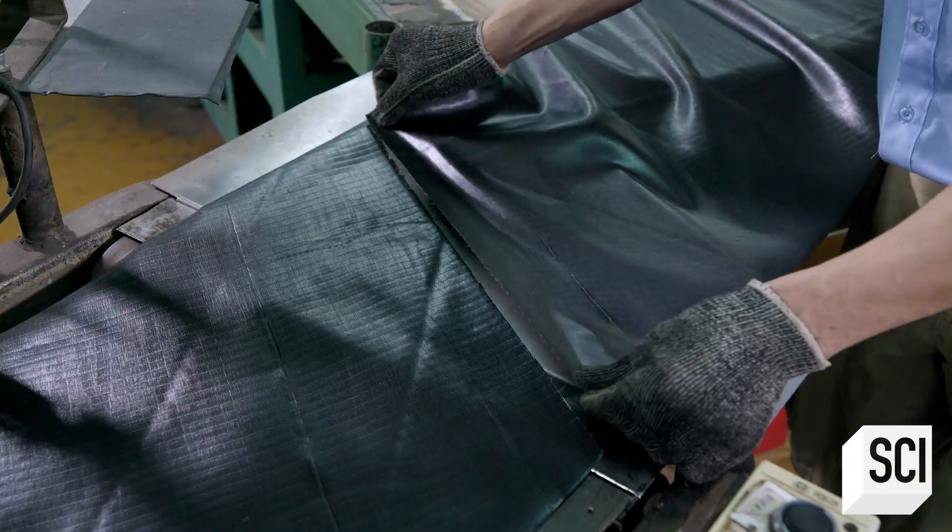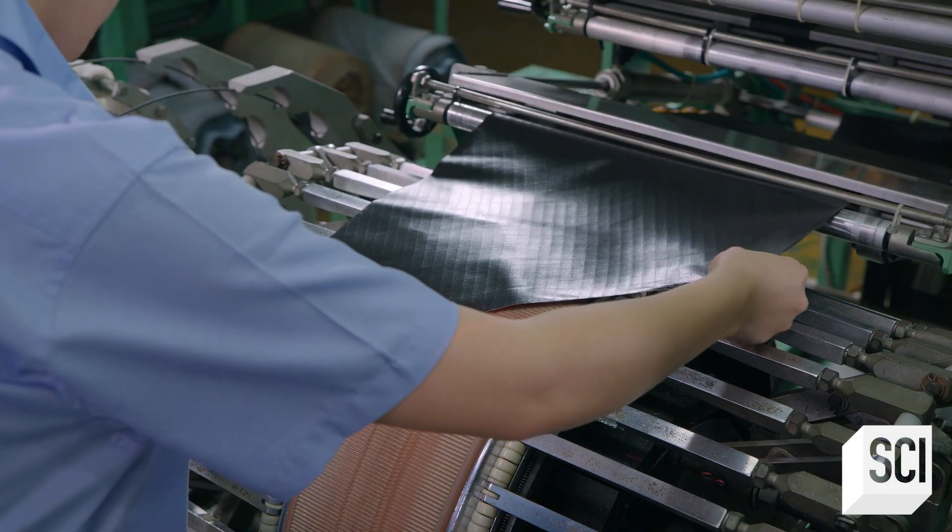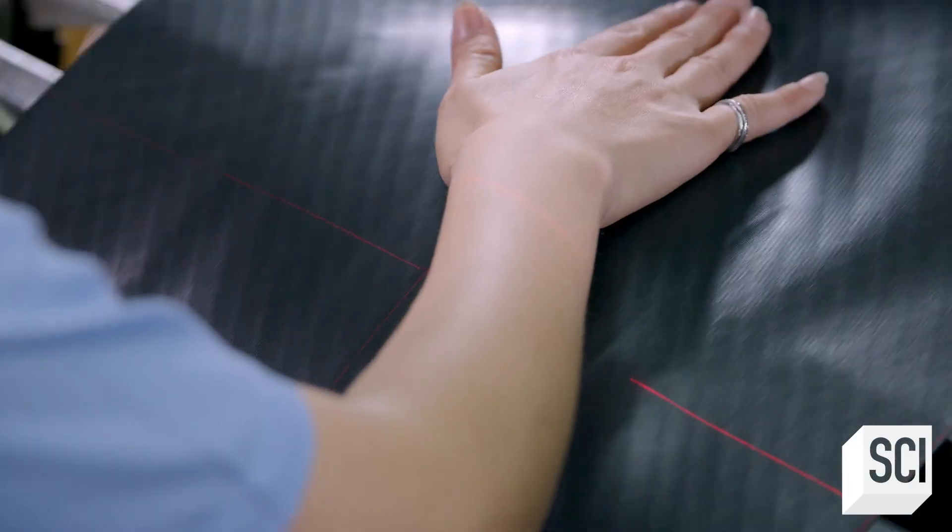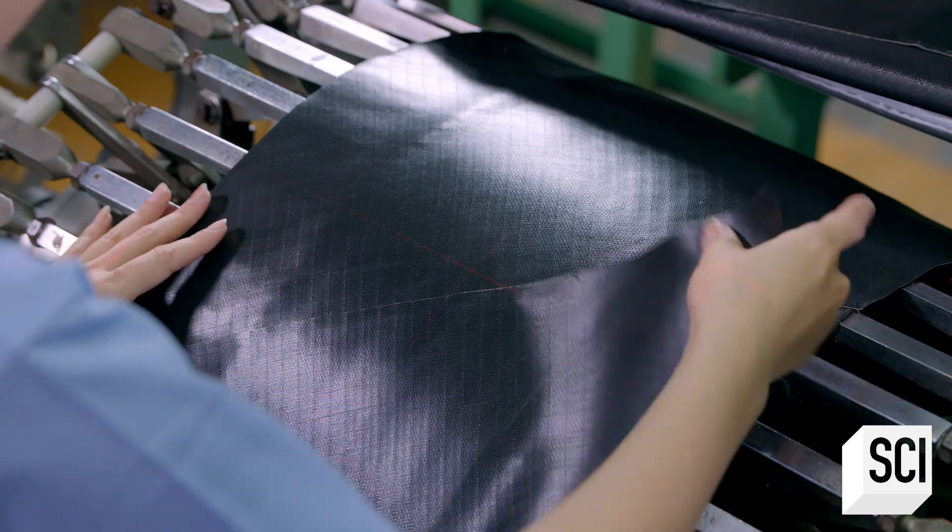The system feeds the strips to the tire building machine. A skilled assembler wraps the strips to the machine drum to form the tire casing and splices the rubber where the ends meet.